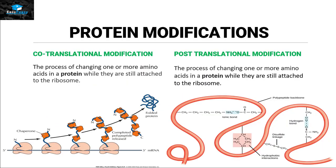Protein modifications can be of two different types: co-translational modification and post-translational modification. The difference is that if the process of modification or changing of one or more amino acids in a protein starts while they are still attached to the ribosome, that is called co-translational modification. As you can see in this picture, the protein is still attached to the ribosome and the ribosome is still moving along the messenger RNA, but chaperones start attaching themselves to this protein and start folding it into the tertiary and quaternary state.